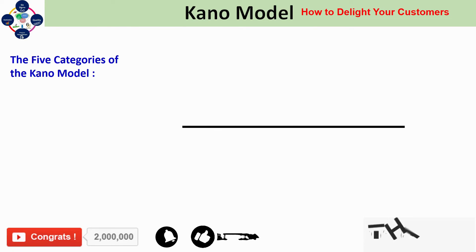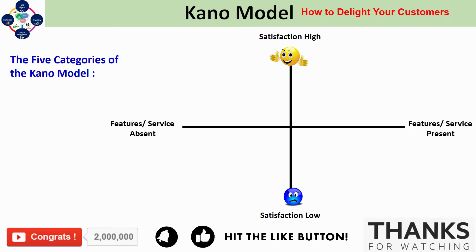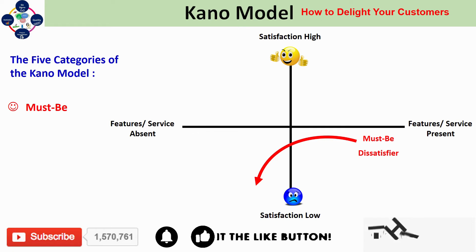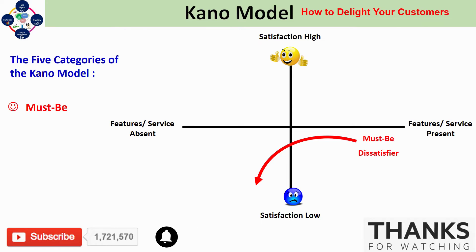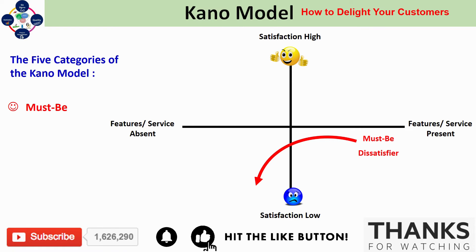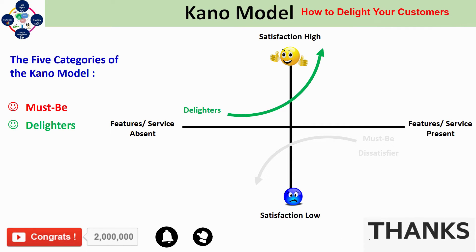The Kano Model is divided into five categories. On the x-axis we have whether a feature is present or absent; on the y-axis we have the satisfaction level from high to low. The first category is the must-be feature: it cannot increase your satisfaction, but its absence can decrease it. As the name signifies, these are must-be features. Examples include working steering on a vehicle, the ability to make phone calls from a smartphone, or buttons on a button-down shirt. The must-be features must be present or the product holds no value.